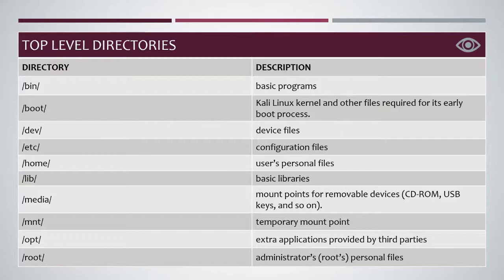Home — users' personal files. Lib — for basic libraries. Media — mount points for removable devices such as CD-ROM, USB keys, and so on. MNT — for temporary mount point. OPT or option — extra applications provided by third parties. Root — administrator's personal files. The administrator is the only one who can access this root directory.